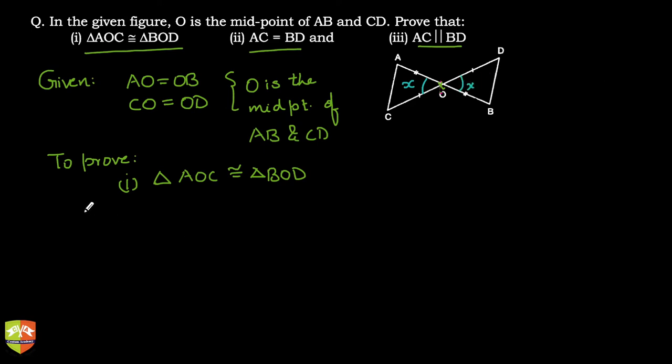So I can say in triangle AOC, let's consider this triangle, and triangle BOD, let's consider the other triangle BOD. So this is BOD and this is AOC. So what is already given? We know that AO is equal to OB, given.